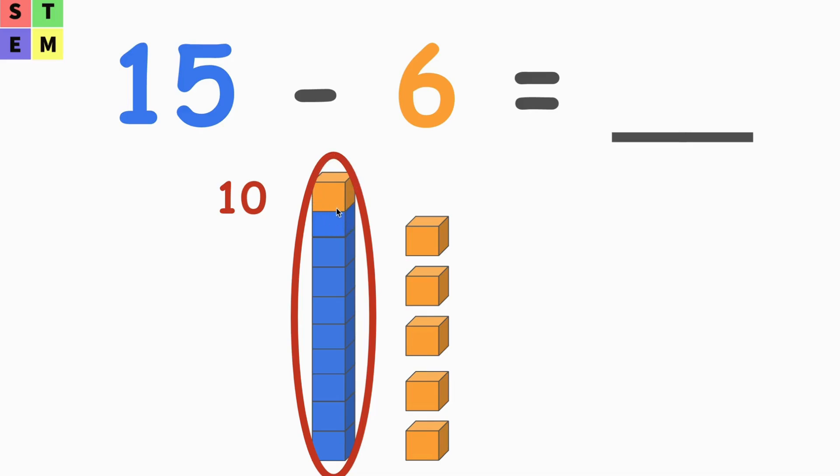So if we minus this block, we are going to have nine blocks left. So basically 15 minus 6 is the same as, let's say, 15 minus first five orange blocks, minus additional one orange block, which equals 9.